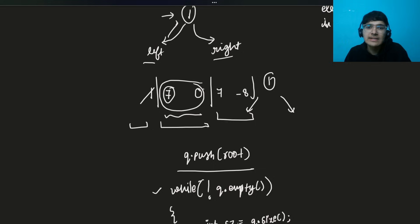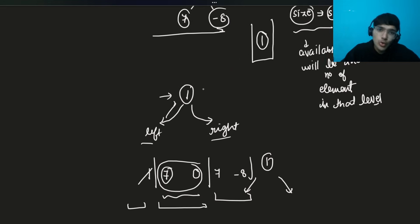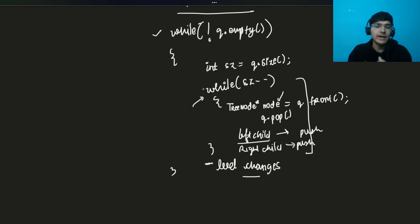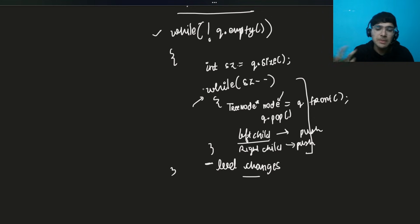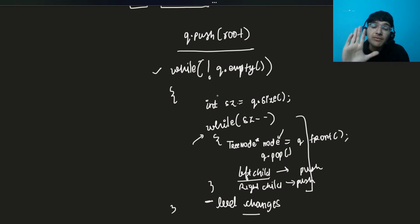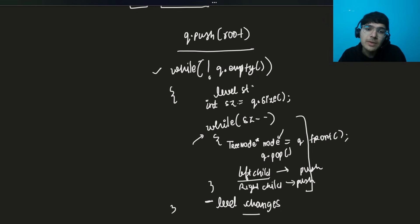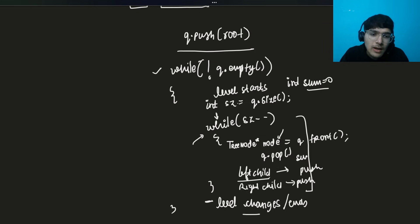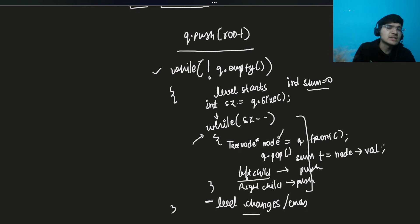In the example, we first got node 1, then seven and zero, then pushed their children. Since zero has no children, level three still has two elements. Now for the actual problem: define a `sum = 0` at the start of each level's processing. Inside the node processing loop, accumulate: `sum += node->val`. By the end of the inner while loop, you have the sum for that entire level.